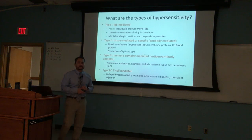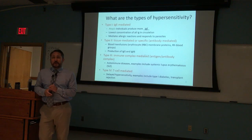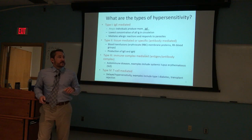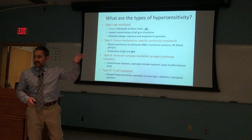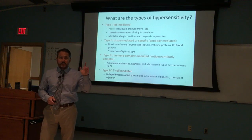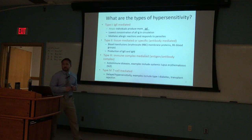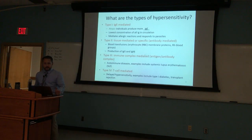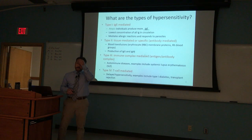There's a B cell that gets engaged and antibodies are produced. So types 1, 2, and 3 involve antibodies because B cells are involved. In type 4, T cells are involved.